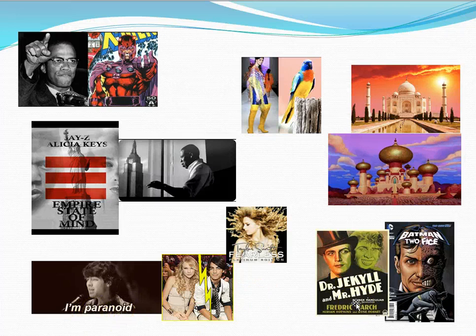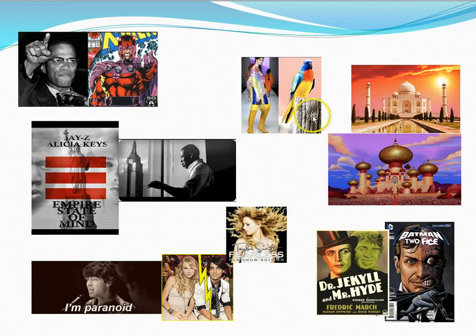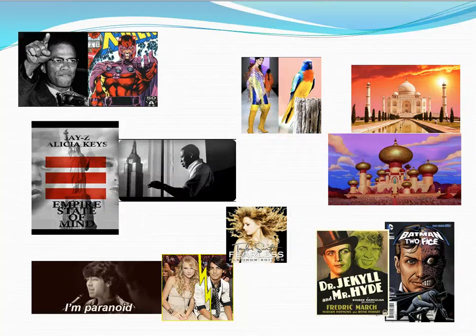Dr. Jekyll and Mr. Hyde was a book and a film that inspired Two-Face and Batman. And up here, this is a screenshot from Aladdin — Aladdin's palace in the Disney movie was actually inspired by the famous Taj Mahal, located in India. So as you can see, a muse doesn't necessarily have to be a person. It could be something in nature, a location, a book, a relationship, or a physical place. All different types of things can be muses.